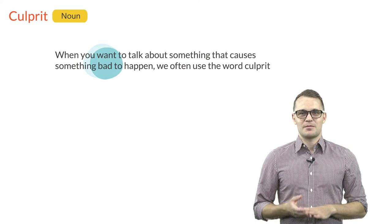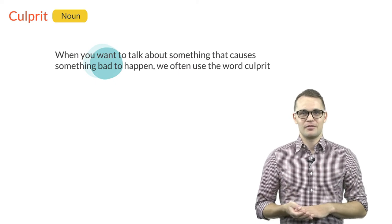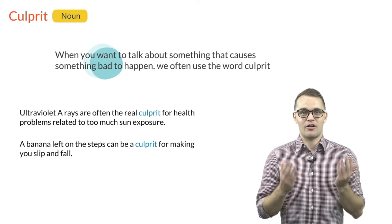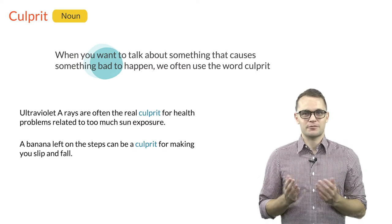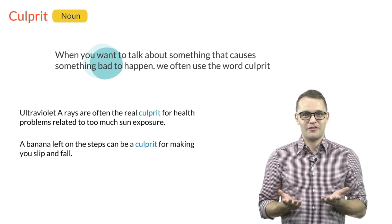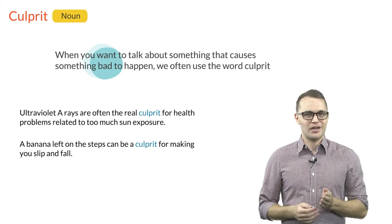When you want to talk about something that causes something bad to happen, we often use the word culprit instead of cause. For example, ultraviolet rays are often the real culprit for health problems related to too much sun exposure. A banana left on the steps can be a culprit for making you slip and fall.